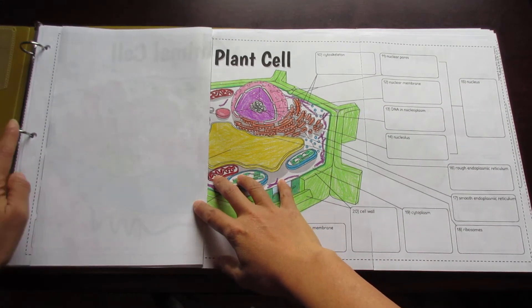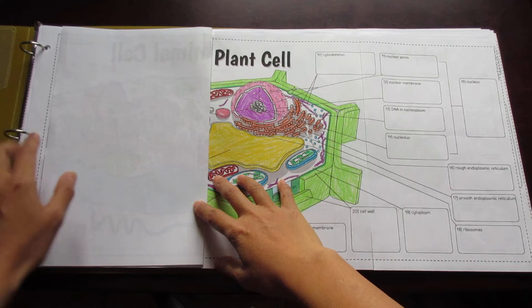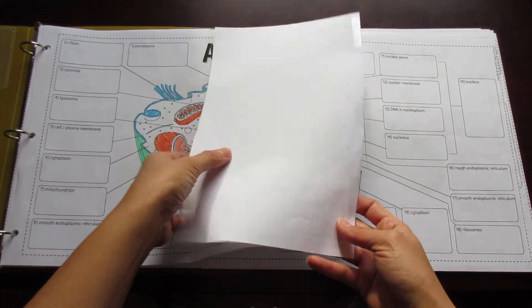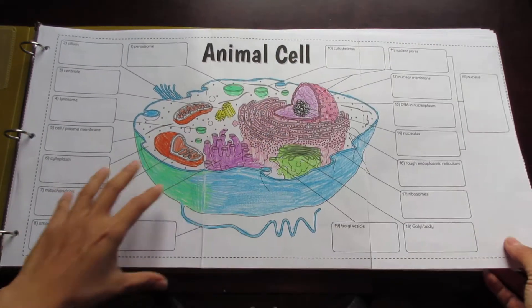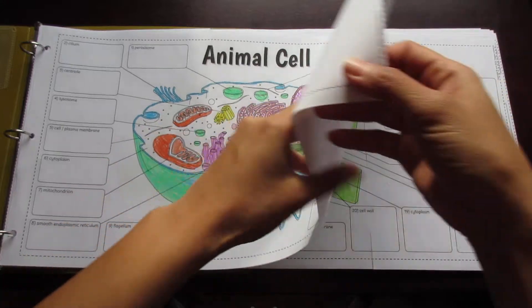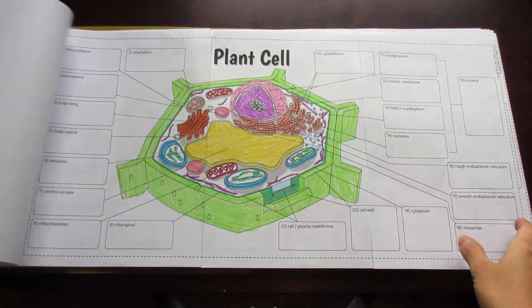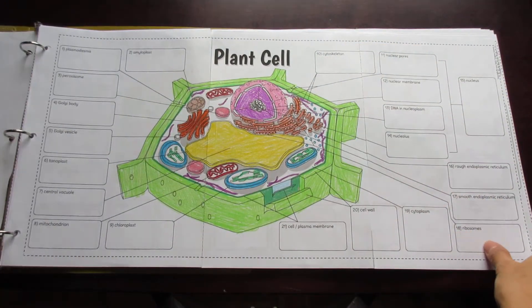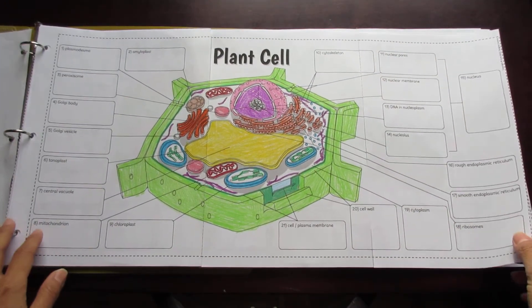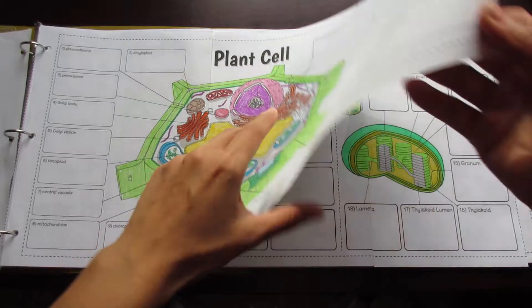In this case, in the binder, it doesn't impede the binder rings. The first one's an animal cell, and of course that would be incomplete when teaching cells if you didn't have the plant cell.